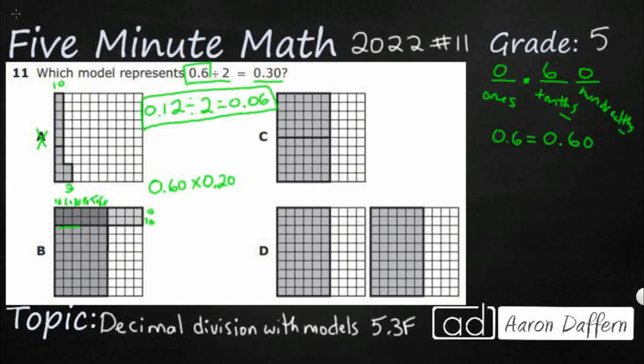So if you take 60 hundredths, you multiply that by 20 hundredths, you get 1, 2, 3, 4, 5, 6, 7, 8, 9, 10, 11, 12. That's actually a very good model of 12 hundredths. And you see, because 6 times 2 makes 12. And then you've got, other than 0, you've got 1, 2 digits behind the decimal, so you need 2 digits behind the decimal in your product. So that's a great representation of 60 hundredths times 20 hundredths equals 1,200ths, but that's not what we're looking for.